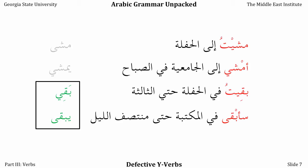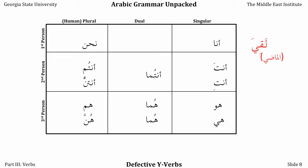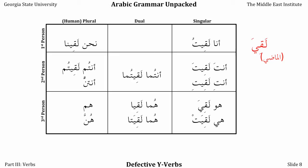Let's look at the past tense conjugation of the verb laqiyah, 'to meet or encounter someone.' Ana laqeitu — we use the long vowel YA. Anta laqeita, anti laqeiti, huwa laqiyah, hiya laqiyat. The dual forms follow the pattern: nahnu laqiyah, antum laqiyatum. And then hum is laqoo — that's the odd one out in this case, so be careful with using it.